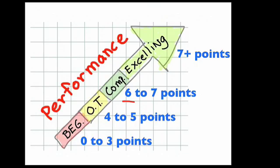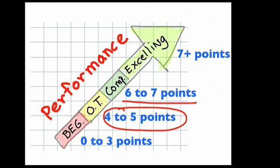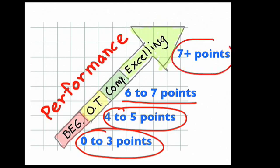If you got six to seven points, this means you're doing competent work and have the skills and knowledge to be successful as an engineer. If you scored four to five points, you're on track but missing a few key ideas. If you're in the zero to three point category, you're in the beginner or not-yet category, and you might want to reconsider your approach or come get some help. And if you're in the seven-plus category, you're really excelling and doing great engineering work.